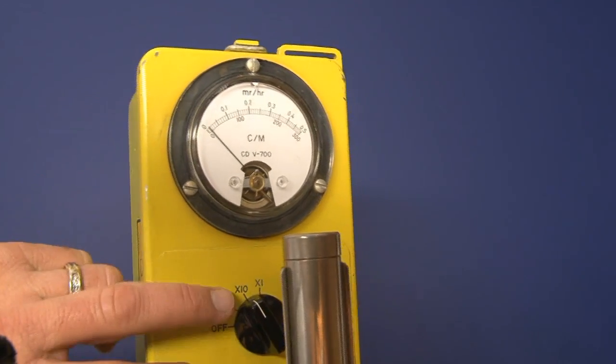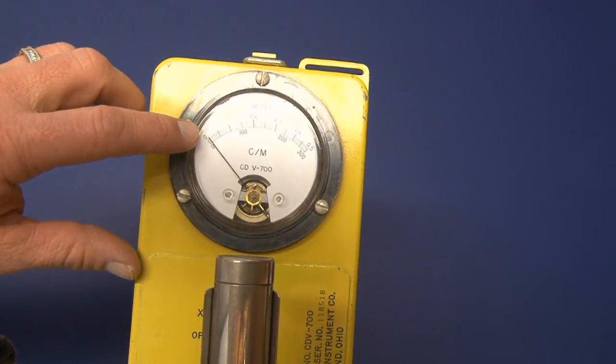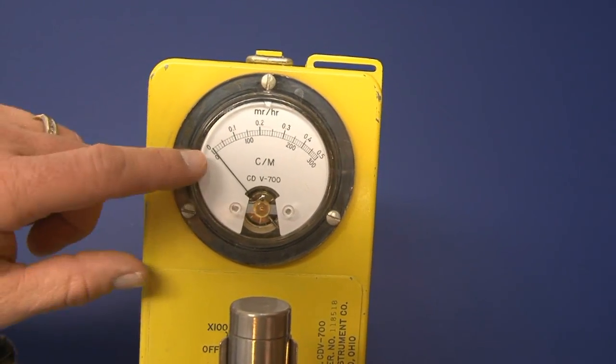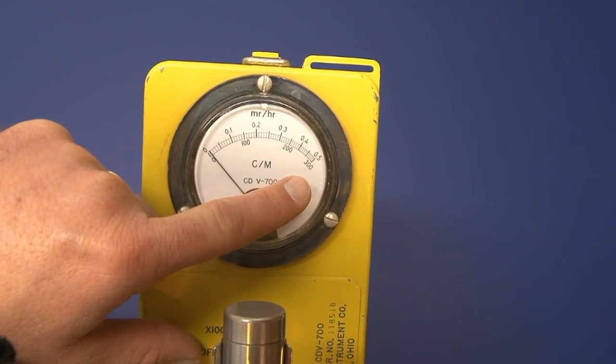If we switch to the times 10 scale, we're going from 0 to 5 MR per hour, or 0 to 3,000 counts per minute.